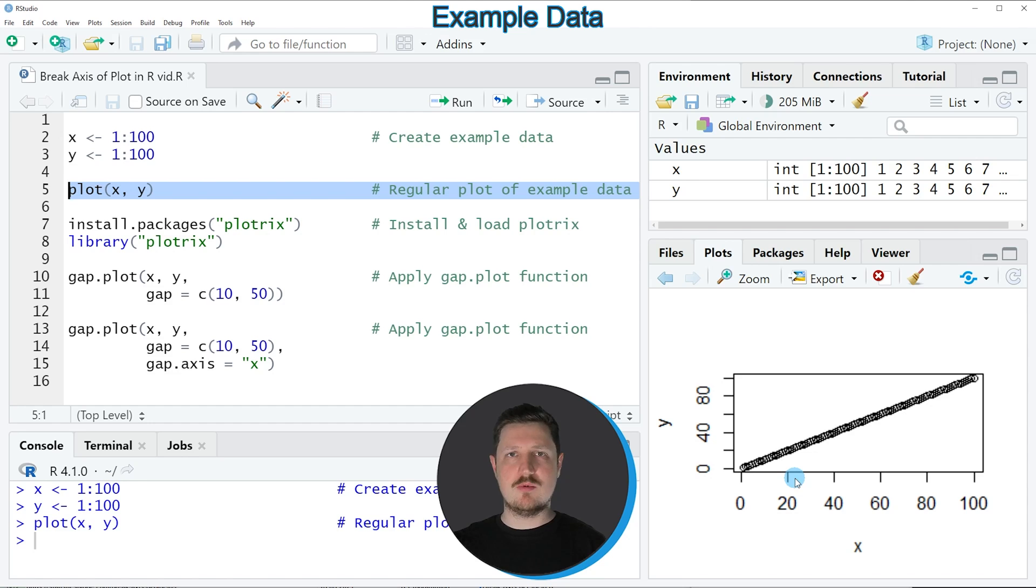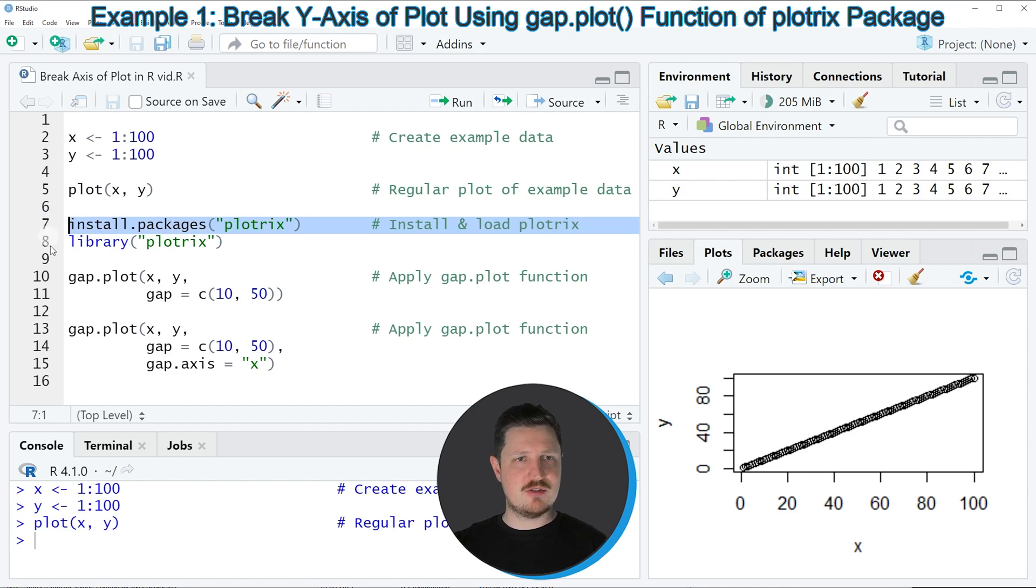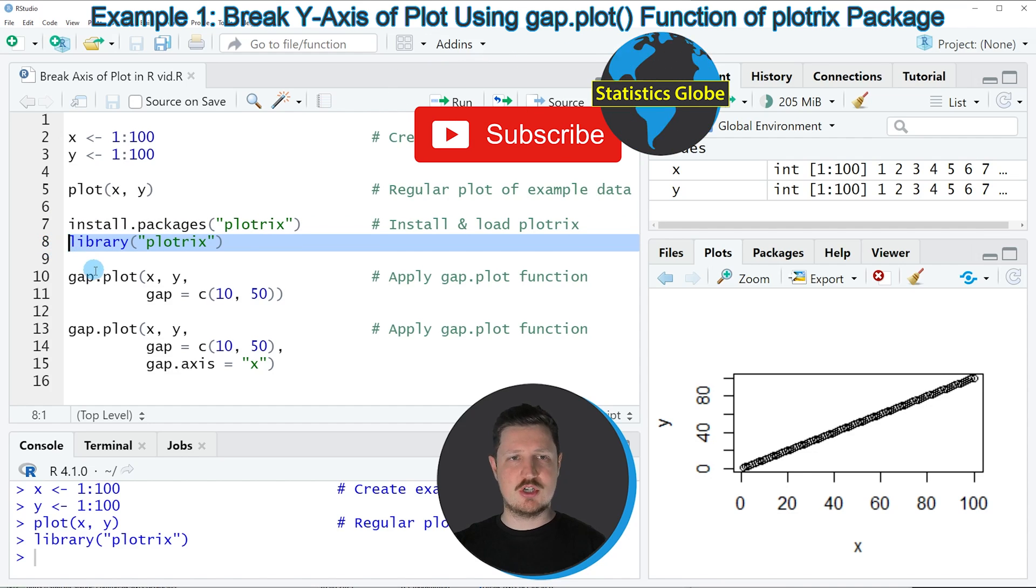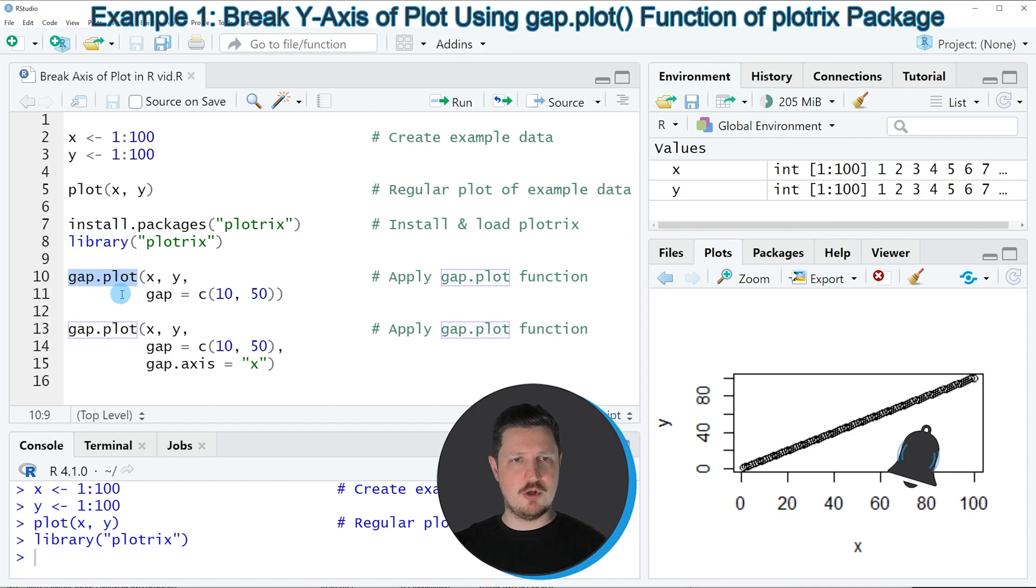Now let's assume that we want to add a break to the axis of our plot. Then we have to install and load the plotrix package as you can see in lines 7 and 8 of the code. I have installed this package already, so for that reason I'm just going to load it with line 8. And after running this line of code we are able to use the functions of the plotrix package such as gap.plot as you can see in lines 10 and 11 of the code.